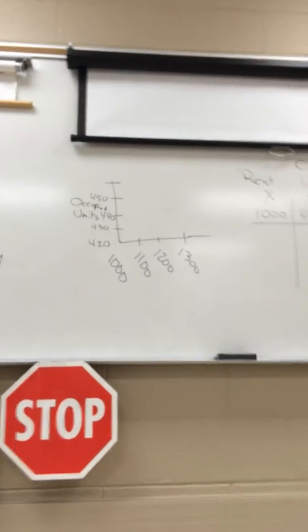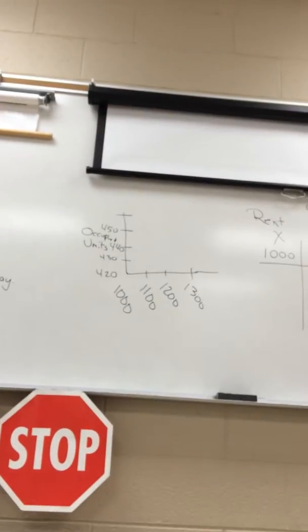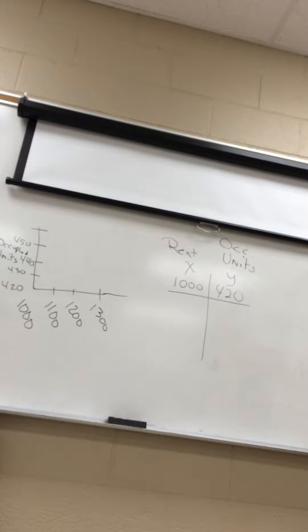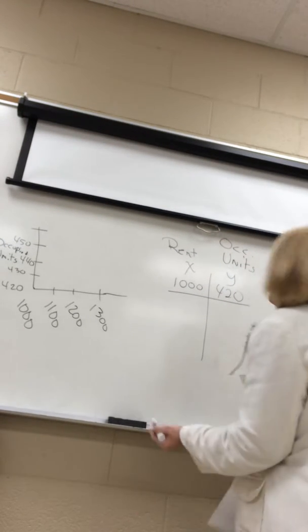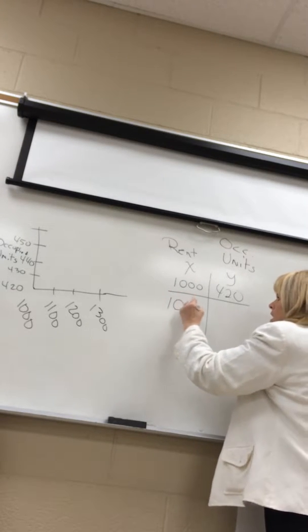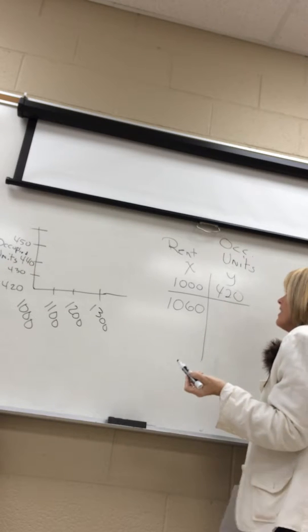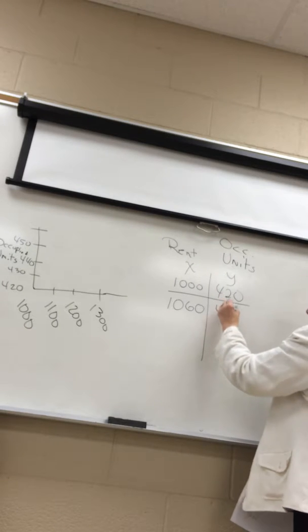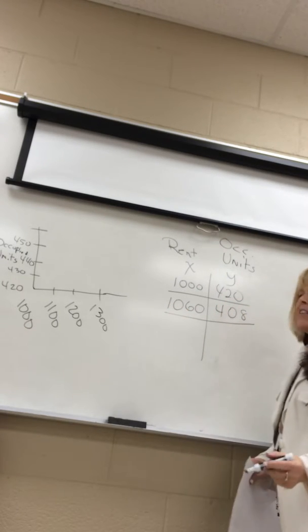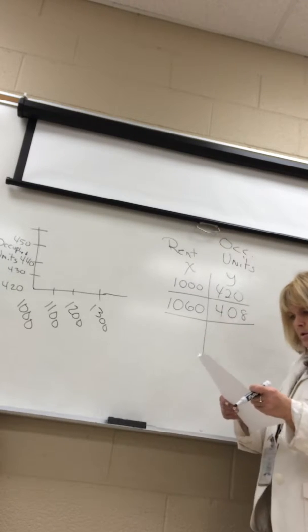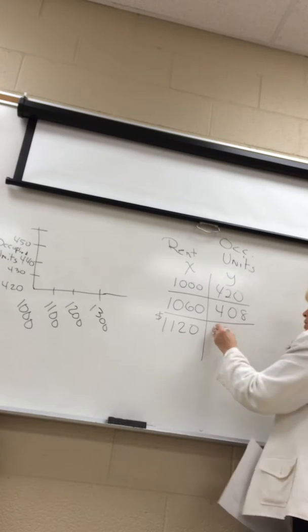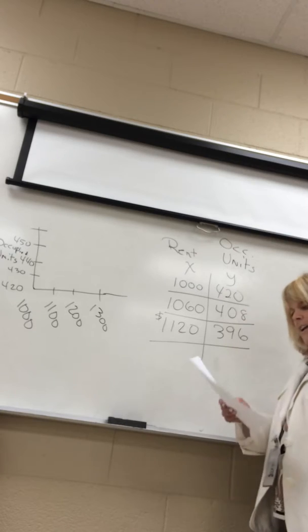Let me move this so you can see it. If they increase the rent $60 — making it $1060 — there would be 12 fewer units occupied, so 408 units. If they increase it $60 more, to $1120, there would again be 12 fewer units occupied.